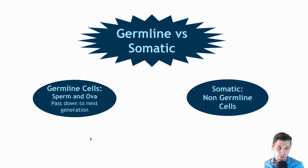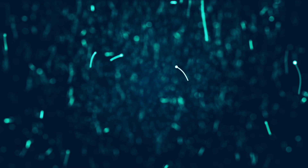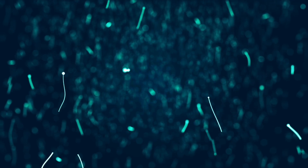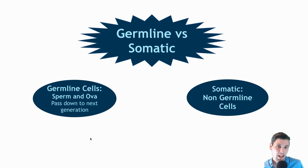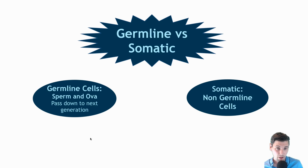First off, what's a somatic cell? Germline cells are cells that will be passed on — sperm and ova passed on to the next generation. Somatic cells are cells which are in your body but are non-germline cells. Today we're going to talk about somatic cells and specifically the things that are unique to somatic cells with respect to radiation.